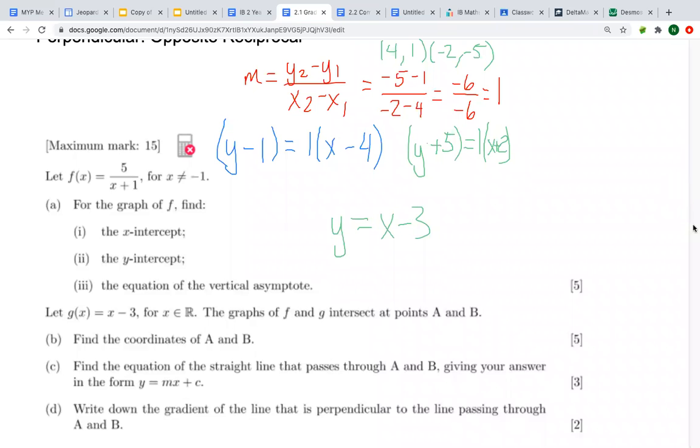Okay, so once you plug in your two points to the slope formula, you should have ended up getting negative six divided by negative six, which is a positive one. So our slope is one. And then depending on which point you chose for the point-slope formula, you would have ended up with either the blue or the green equation. But no matter what, when you converted it back to the form y equals mx plus c, like the question asked you to, you should have ended up with this final answer of y equals x minus three.